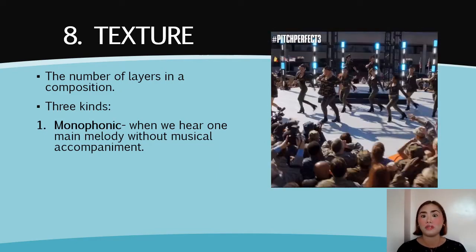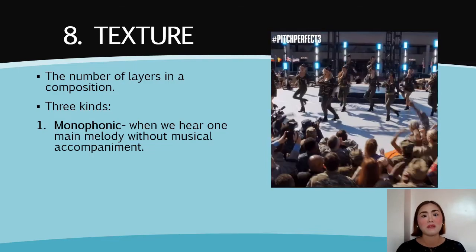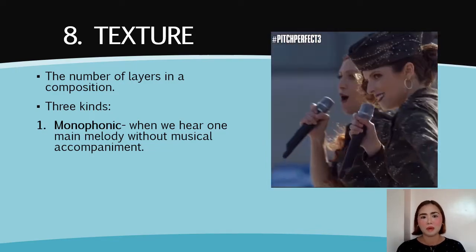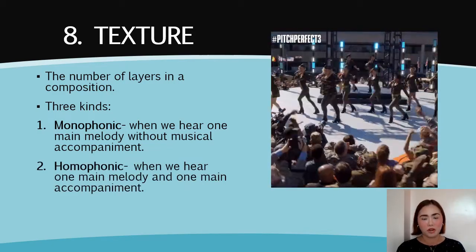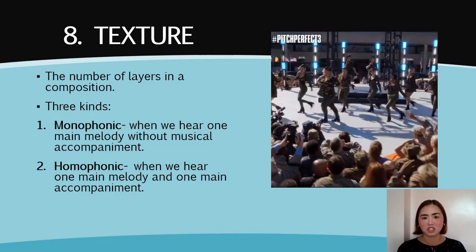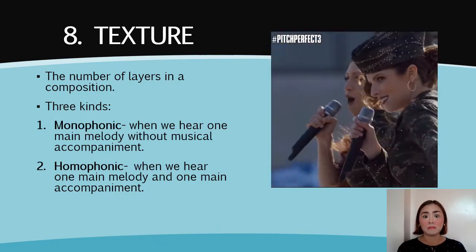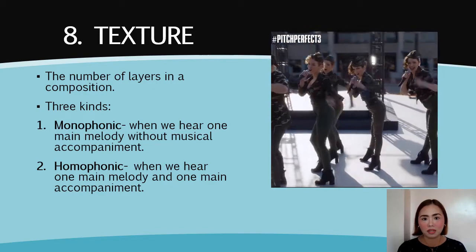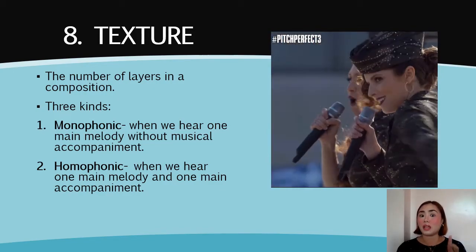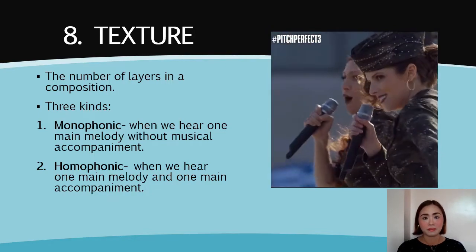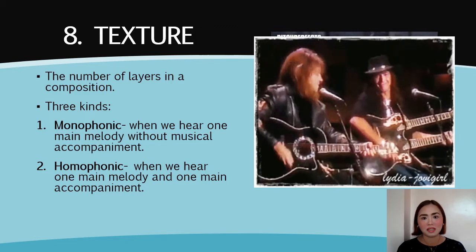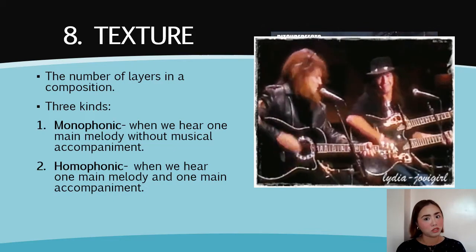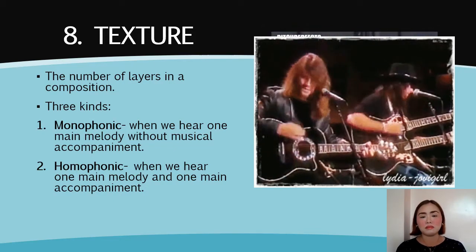We have a cappella. The source of the melody are the voices of the singers, and they do not have musical accompaniment. The second type of texture is what we call homophonic texture. When we say homophonic texture, we hear one main melody and one main musical accompaniment. An example of a genre under the homophonic texture is acoustic — you hear one or two main melodies from the singers and one musical accompaniment, which is the acoustic guitar.